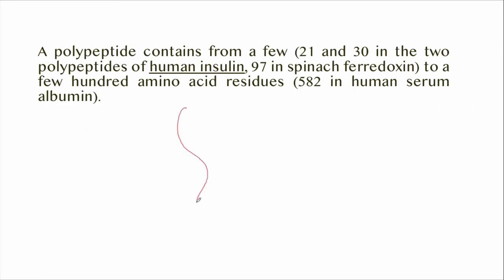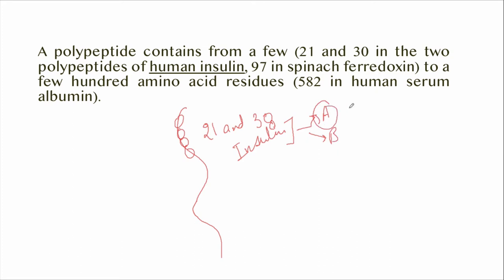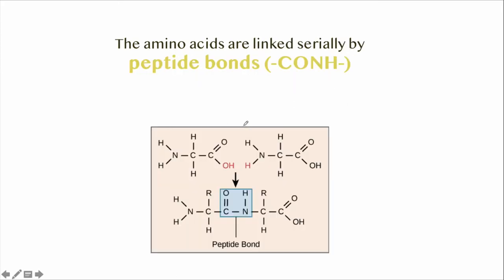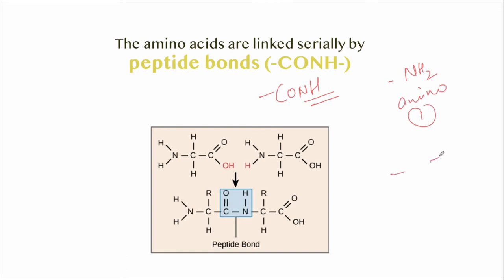A polypeptide chain contains a few to a few hundreds of amino acid residues. In human insulin, the two polypeptides have 21 and 30 amino acid residues respectively — chain A has 21 and chain B has 30 amino acids. The amino acids are linked serially by peptide bonds, which are CONH bonds formed between the amino group (NH₂) of one amino acid and the carboxylic group of the adjacent one.